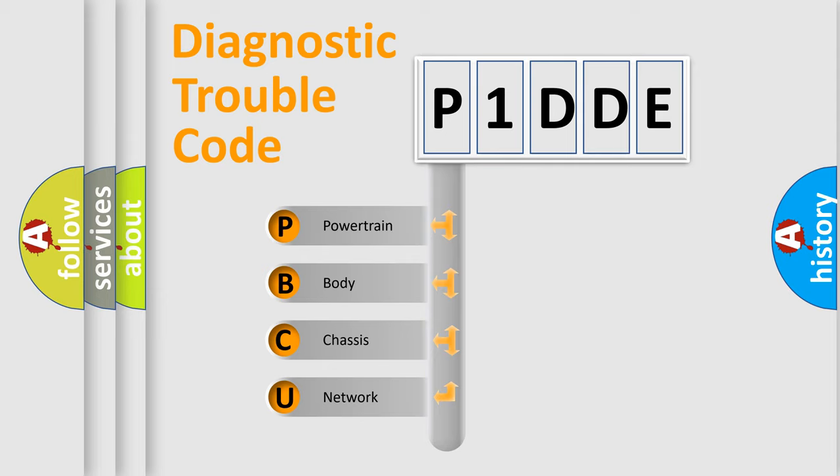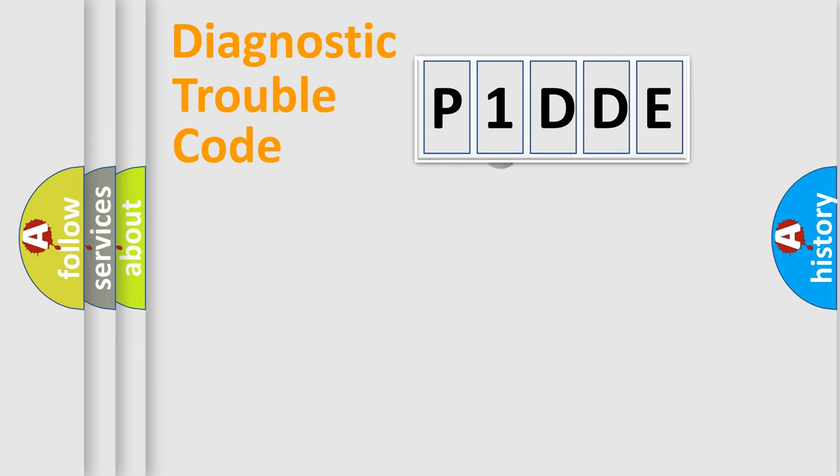We divide the electric system of automobile into four basic units: Powertrain, Body, Chassis, and Network. This distribution is defined in the first character code.